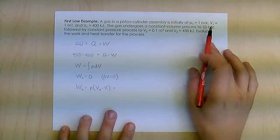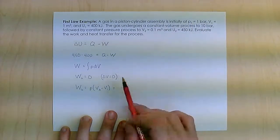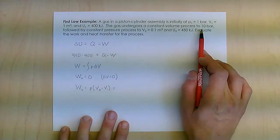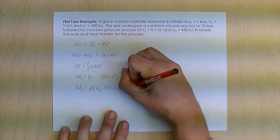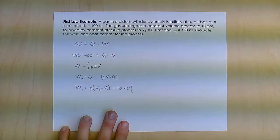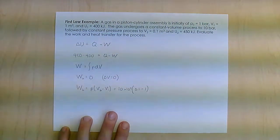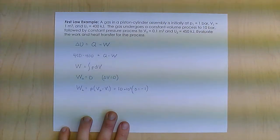My pressure is 10 bar at this point. This is that second process, the constant pressure process. So it's going to be 10 times 10 to the 5th Pascals, times V2 minus V1, which is 0.1 minus 1.